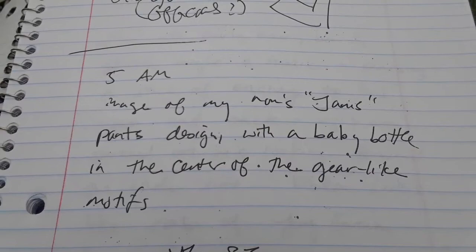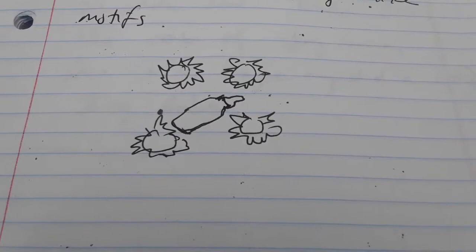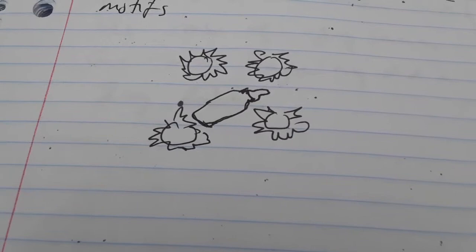Image of my mom's Janice Pants designs with a baby bottle in the center is the gear-like motifs. So, I call these gear-like motifs, and I didn't draw them very well, but they are kind of like gears. They were actually sort of like flowers, stylized flowers, but they were with the small pointy points, like a 1960s psychedelic design. And so, in this, there's a baby bottle inside of it. Maybe describing how young my mom was. So, my mom would have gotten pregnant in 1967 with me.